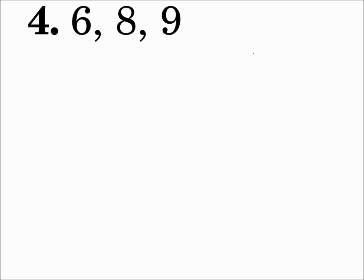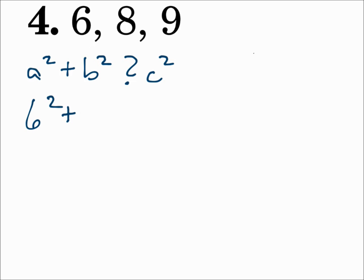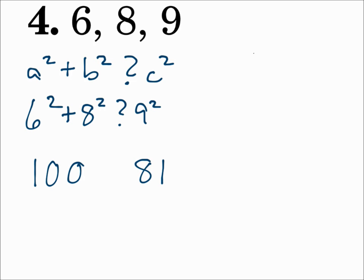Number 4: 6, 8, and 9. Is it a triangle? Is 6 plus 8 greater than 9? Yes, it is. What kind of triangle is it? Compare a squared plus b squared to c squared — c is the biggest number. 6 squared plus 8 squared compares to 9 squared. We get 100 on the left and 81 on the right. 100 is greater than 81. When a squared plus b squared is greater than c squared, that's an acute triangle.